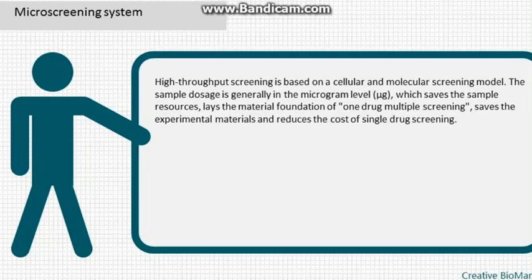High throughput screening is based on cellular and molecular screening models. The sample dosage is generally in the microgram (μg) level, which saves sample resources, lays the material foundation for one drug to undergo multiple screenings, saves experimental materials, and reduces the cost of single drug screening.